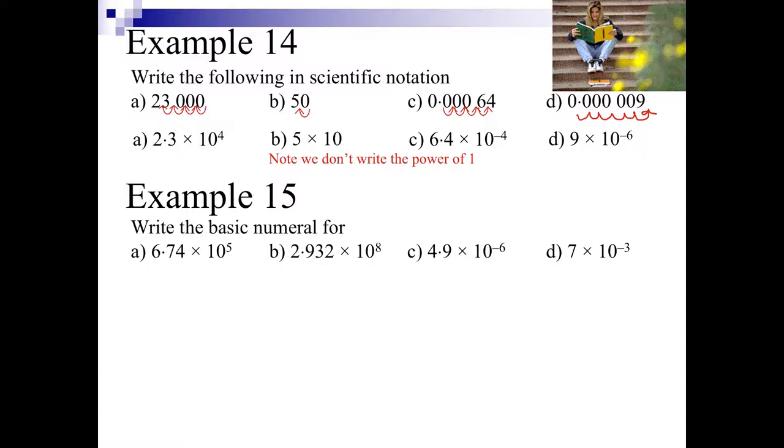Now, to write them in basic numbers, so here we have 6.74, we're going to write down the 6.74 and then we'll move the decimal place plus 5 spaces, so that will give us 674,000. And you can see that what we've done is we've put zeros in to the empty spaces as placeholders, and that gives us 674,000.